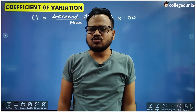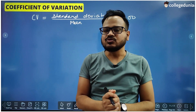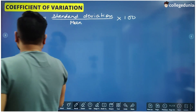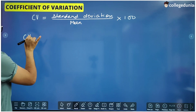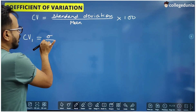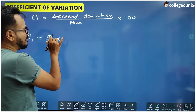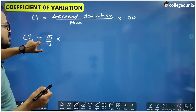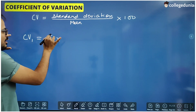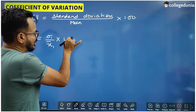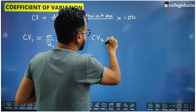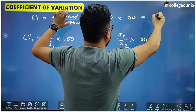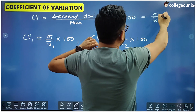What is the use of coefficient of variation? Coefficient of variation is basically used to compare the variance, the dispersion of data in two different series. For example, there are two different series: the coefficient of variation of the first series is sigma divided by mean — where sigma is the symbol for standard deviation and mean is represented by x-bar — so CV1 is sigma1 by x-bar1 into 100, and CV2 is sigma2 divided by x-bar2 into 100.